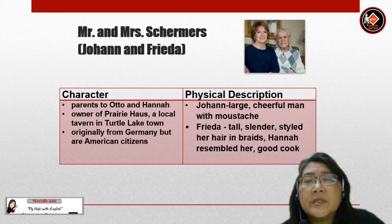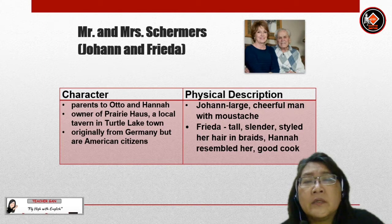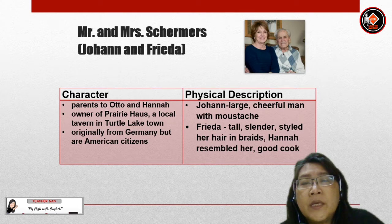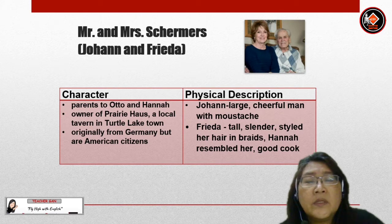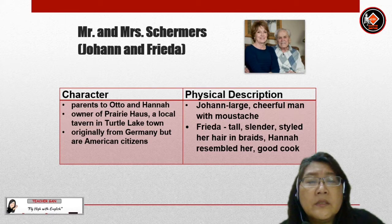The next characters are Mr. and Mrs. Shremus. Mr. Shremus is Johan and Mrs. Shremus is Frida. They are parents to Otto and Hannah. They are owners of Prairie House, a local tavern in Turtle Lake. They were originally from Germany but are American citizens.